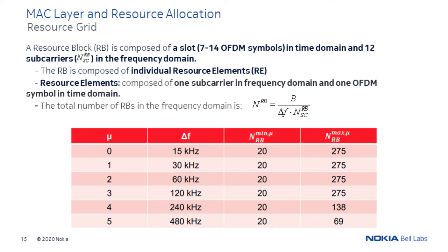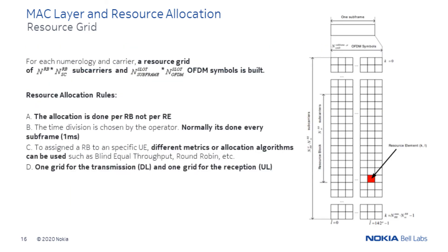These individual time-frequency units are the resource elements. The total number of resource blocks in frequency is obtained by dividing the total bandwidth by the sub-carrier spacing times the number of sub-carriers per resource block. Following these rules, the resource allocation grid can be built, and all resource elements within the grid are assigned arbitrarily to different UEs. However, some rules must be followed: the allocation is done per resource block, not for each individual resource element, and the time allocation is normally done every sub-frame. The resource allocation is done according to the selected allocation metric. In practice, two separated resource allocation grids are used — one for downlink and another for uplink.